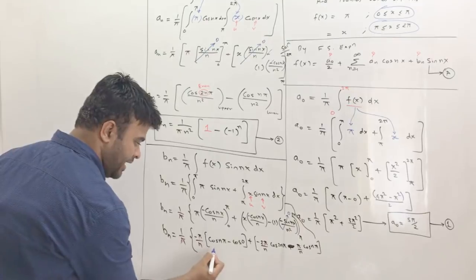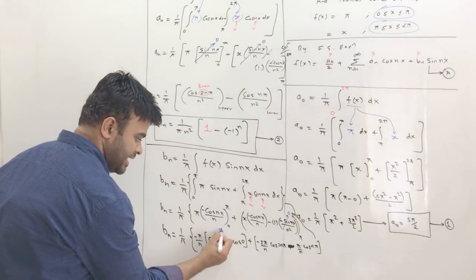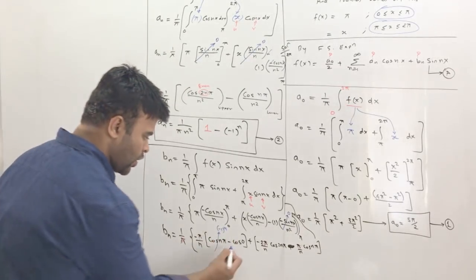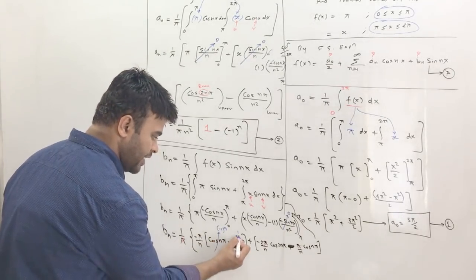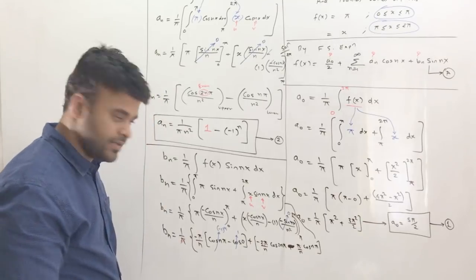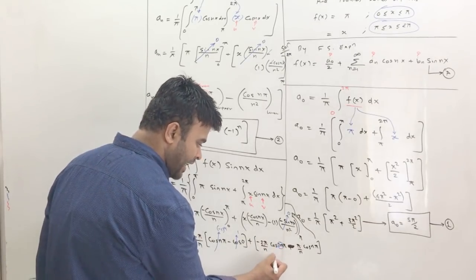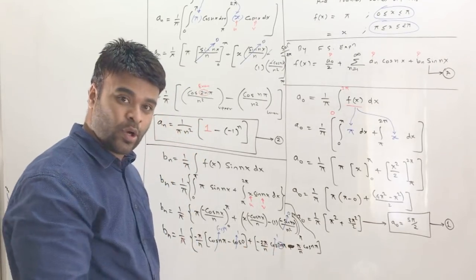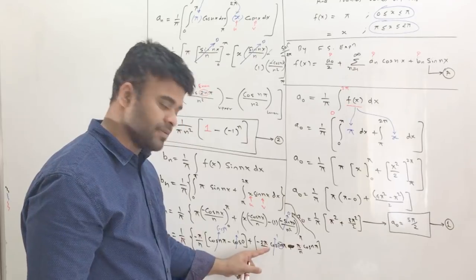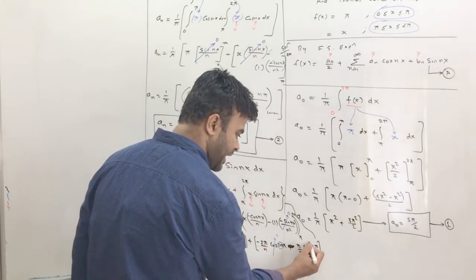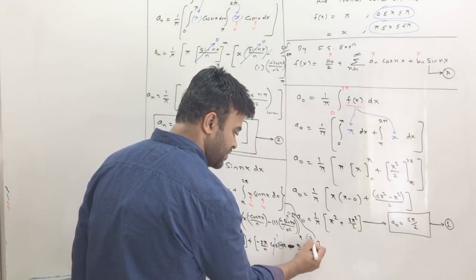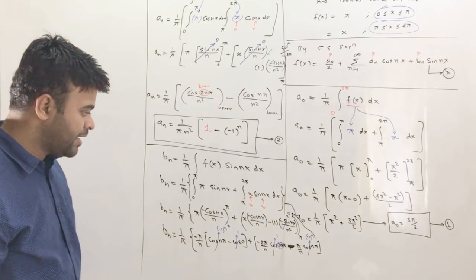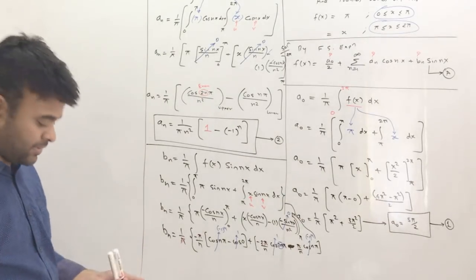Substituting the trig values: cos(nπ) = (−1)ⁿ, cos(0) = 1, cos(2nπ) = 1 (since 2n is even, cos of even π is 1), and cos(nπ) = (−1)ⁿ. Using these, we can now write down the final simplified expression for bₙ.